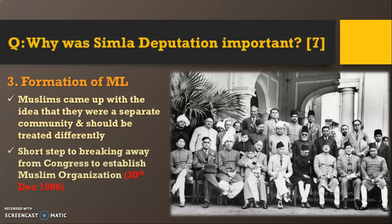This deputation showed that Muslims were coming up with the idea that they were totally different from the Hindus and should be treated differently. The Shimla Deputation showed there was a short step for Muslims to break away from Congress and establish their own organization — the Muslim League, established on 30th December 1906. The organized effort of the 36-person delegation under Agha Khan was the reason behind the success of the deputation, and Muslims realized that with their own political party, more of their demands could be accepted by the British.